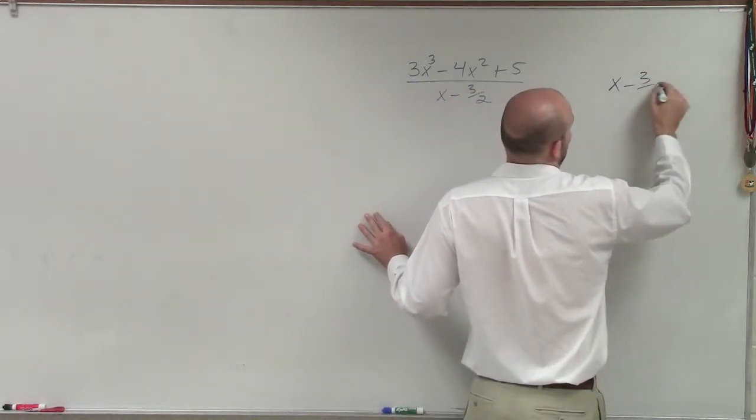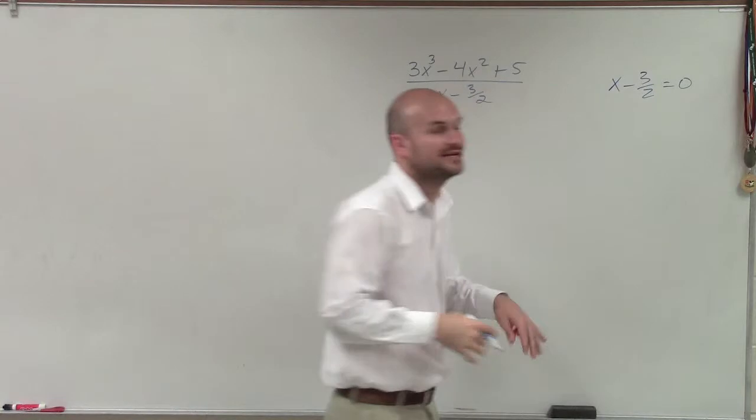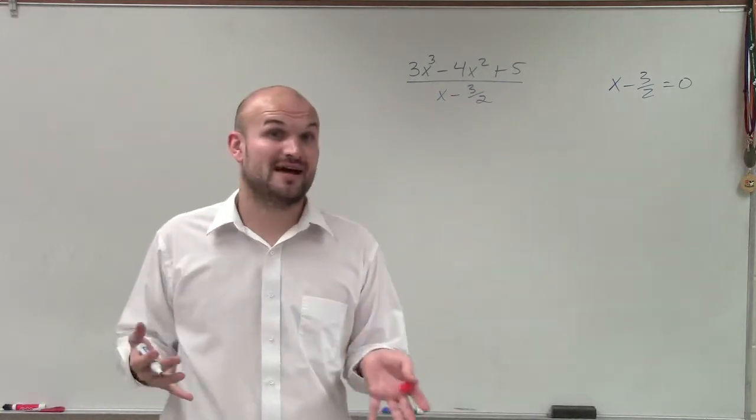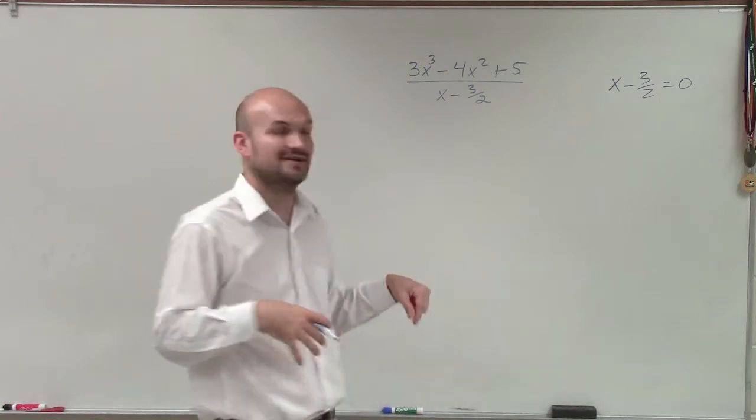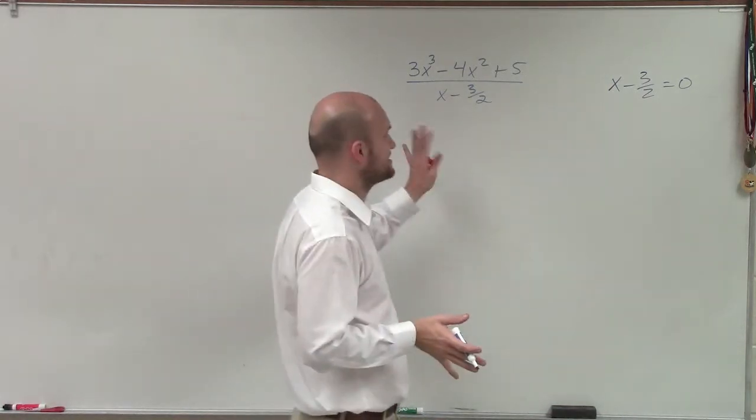Take x - 3/2 and set it equal to zero. Take your divisor, which we call our factor, and we're going to set it equal. When we're talking about functions, we'll talk about it as being a factor. But we're going to take our divisor, set equal to zero.